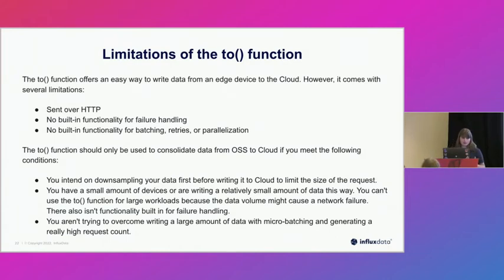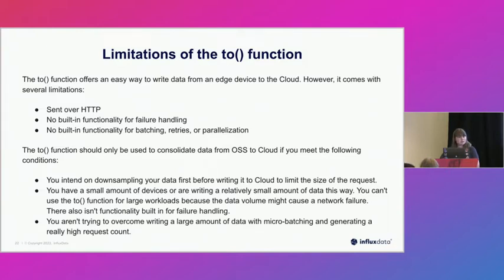There are some limitations to this old approach. It's sent over HTTP with no built-in functionality for failure handling, no built-in batching, retries, or parallelization. This method really should only be used to consolidate data from OSS to cloud if you intend to downsample your data first before writing, and you have a very small number of devices — maybe only one or two sensors. For large workflows it won't work and will probably cause network failures, as we saw quite often.